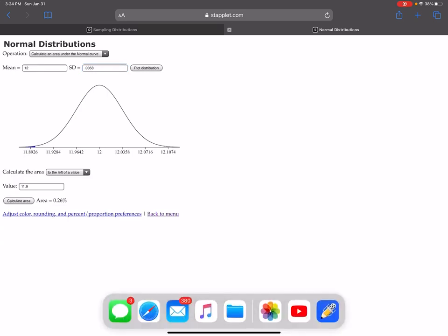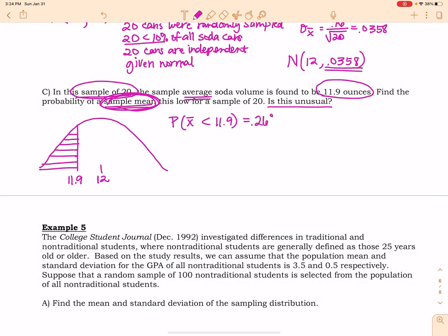And I want the same thing to the left of 11.9. Ooh, 0.26%. Now the probability that the average of 20 cans of soda will be less than 11.9, that's only 0.26%. That's less than 1%. This is unusual. So notice the difference between a single can, any one random can I pick, not that unusual if it has less than 11.9 ounces. But if I take 20 and it averages to be that way, there's the problem.